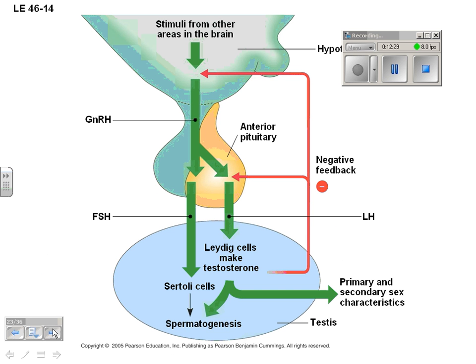In males, hormones from the brain — the pituitary gland and the hypothalamus — produce testosterone, which leads to spermatogenesis.